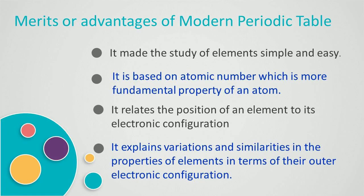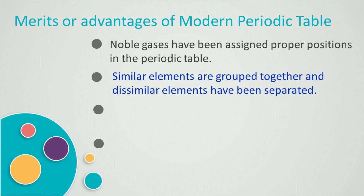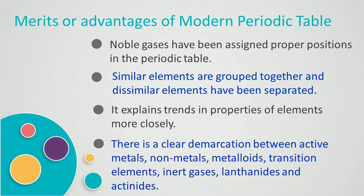This table also explains variations and similarities in the properties of elements in terms of their outer electronic configurations. Noble gases have been assigned proper positions in this periodic table. In this table, similar elements are grouped together and dissimilar elements have been separated. It explains trends in properties of elements more closely. There is a clear demarcation between active metals, non-metals, metalloids, transition elements, inert gases, lanthanides, and actinides.